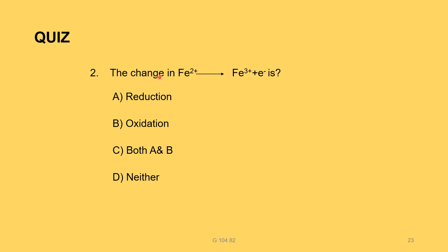Question: the change Fe²⁺ → Fe³⁺ + e⁻ is — oxidation. In this reaction, iron loses one electron, and losing of electrons is called oxidation. So option B (oxidation) is the correct answer.